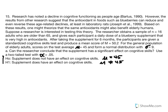For the general population of elderly adults, scores on the test average 45 and form a normal distribution with a standard deviation equal to 9. Can the researcher conclude that the supplement has a significant effect on cognitive skills? Use a two-tailed test with alpha equal to 0.05. The null indicates that those who take the supplement would average a cognitive skill score of 45 — same as the population. The research hypothesis says it will not equal 45.